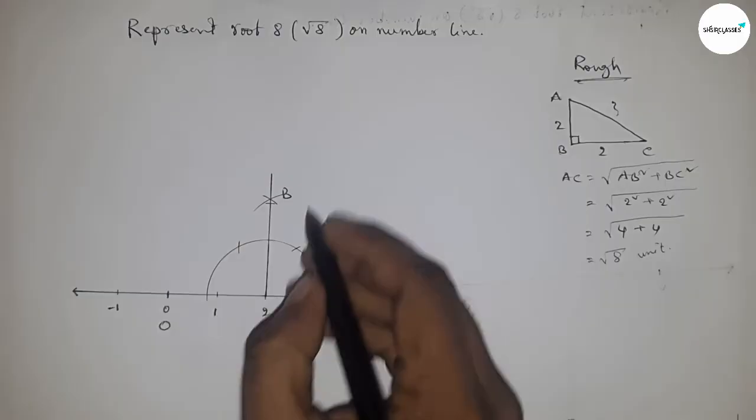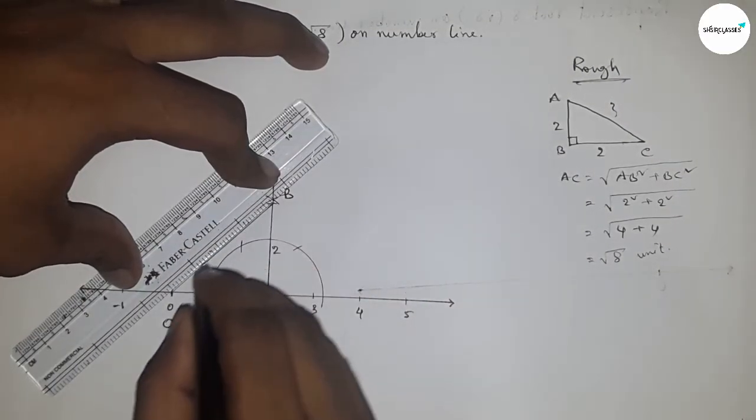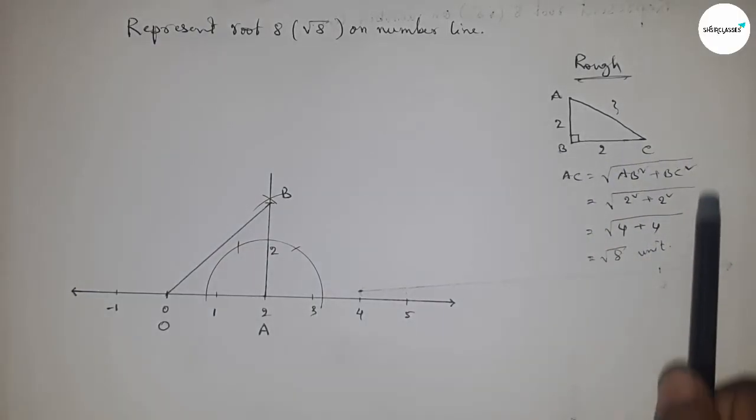Now joining O and B. So from this we can say that OB equal to root 8 unit.